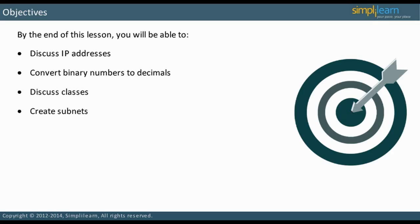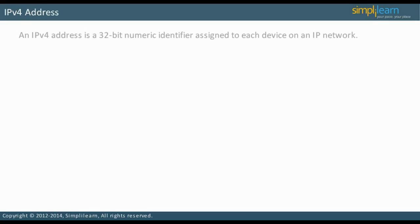Let us begin with an introduction to IPv4 addressing. An IPv4 address, hereafter called an IP address, is a 32-bit numeric identifier assigned to each device on an IP network. It is assigned in software and has no relation to the underlying hardware. The format is dotted decimal — it consists of four numbers separated by periods. For example, 192.164.2.1 is a valid IPv4 address.